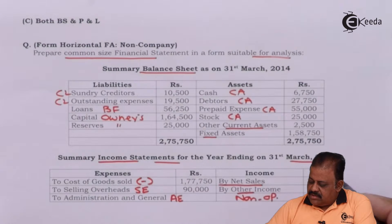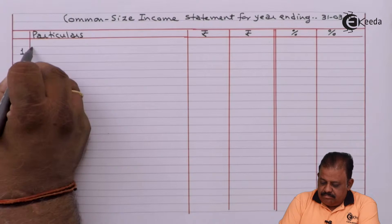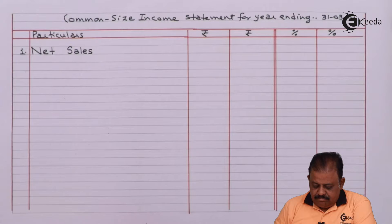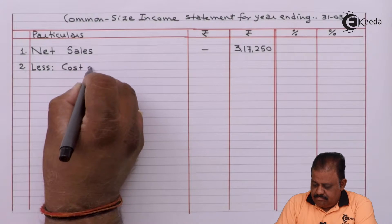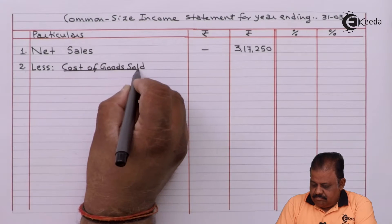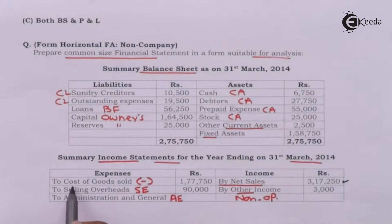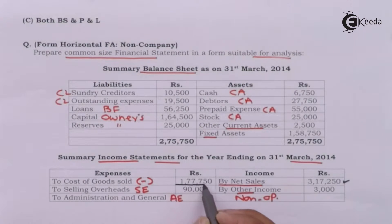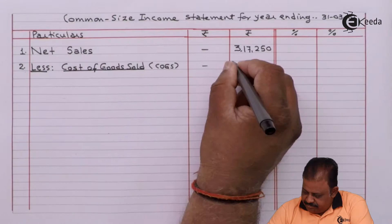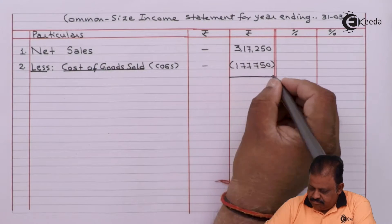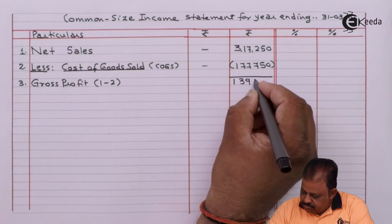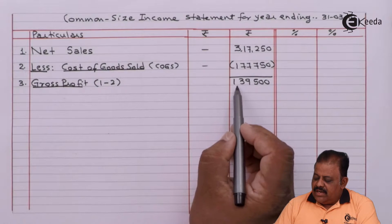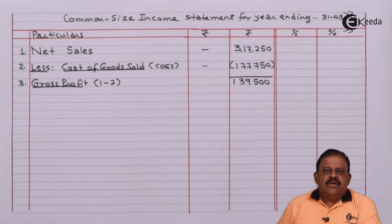We start with net sales: 3,17,250. Cost of goods sold is 1,77,750, which we deduct from sales to arrive at gross profit. Gross profit is 1,39,500, from which we are required to deduct operating expenses.